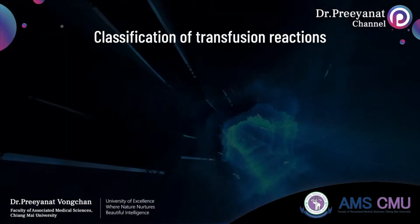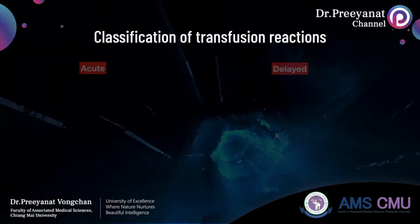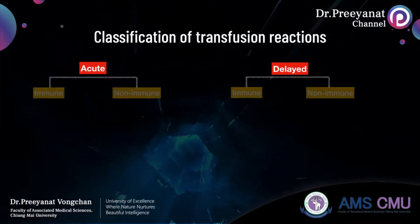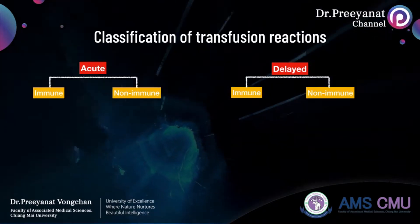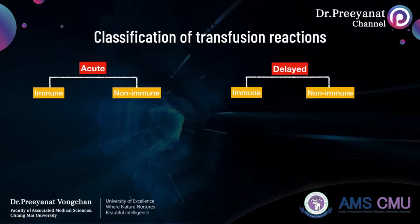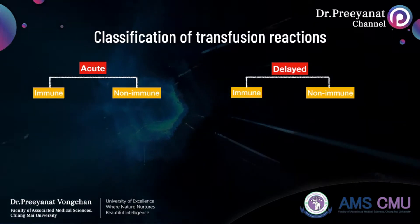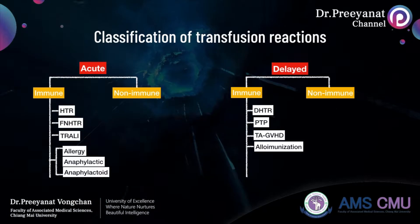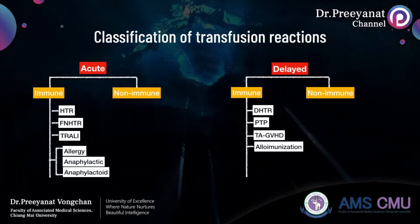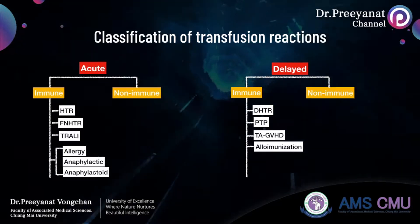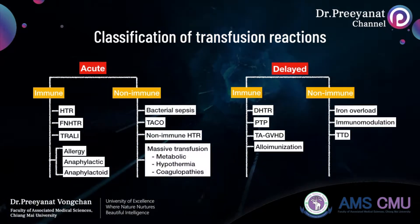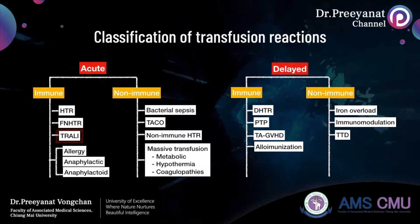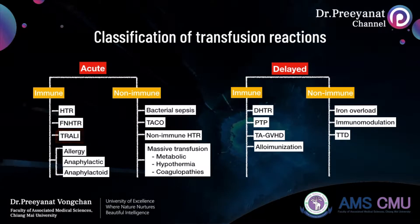Transfusion reactions are classified into two main groups, acute and delayed, depending on the onset of the reaction. Both groups are also divided into immune and non-immune-mediated based on causes. Immune-mediated reactions mean that patients produced antibodies specific to red blood cells, white blood cells, platelets, or plasma, while non-immune-mediated reactions are caused by other factors. TRALI is classified as an immune-mediated acute transfusion reaction.